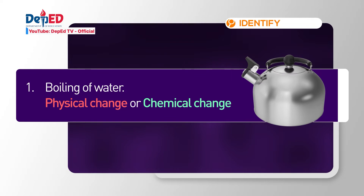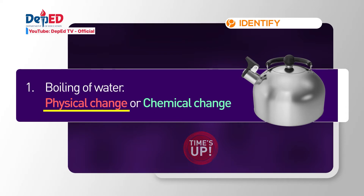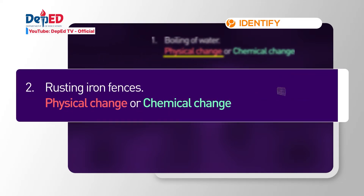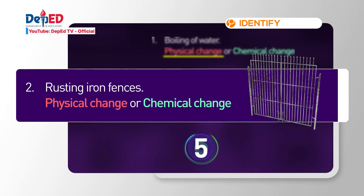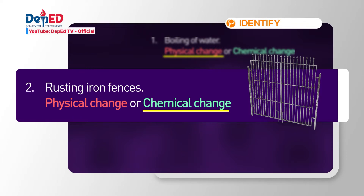Boiling of water. Is boiling of water a physical or chemical change? The answer: physical change. Boiling water creates the process of evaporation, where a liquid turns into gas. What about rusting iron fences? If you answered chemical change, you are correct. Rusting causes a change in the chemical composition of a certain material.